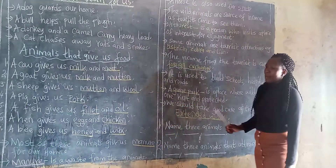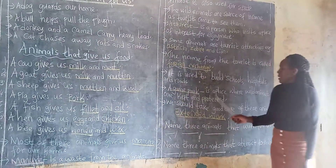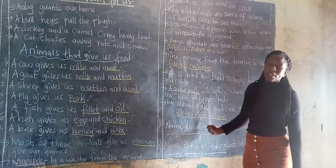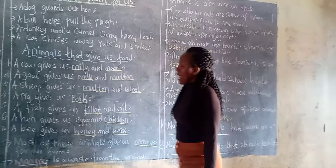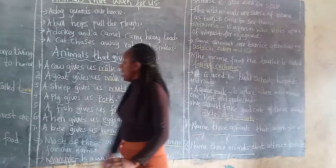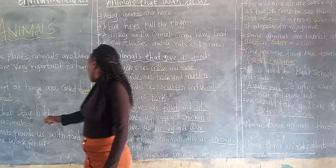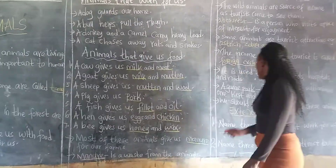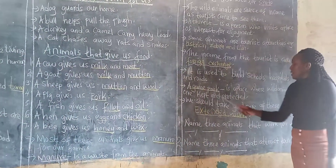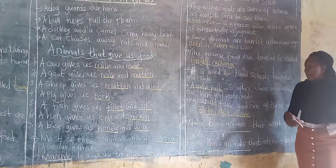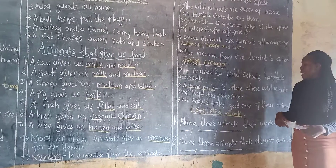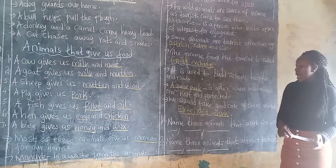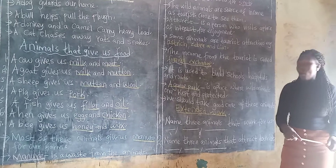So a game park — this is a place where wild animals are kept and protected. As I said earlier, wild animals they stay in the forest, so these wild animals are kept in a place known as a game park. A game park is a place where wild animals are kept and protected.